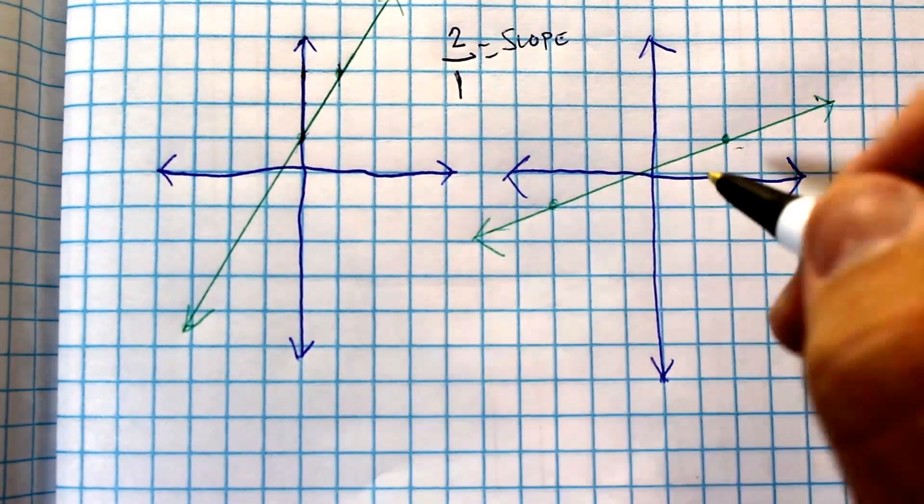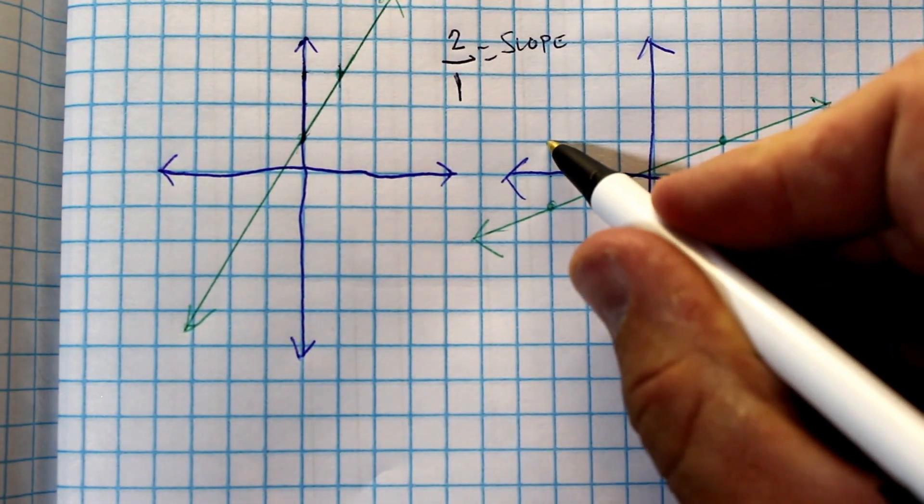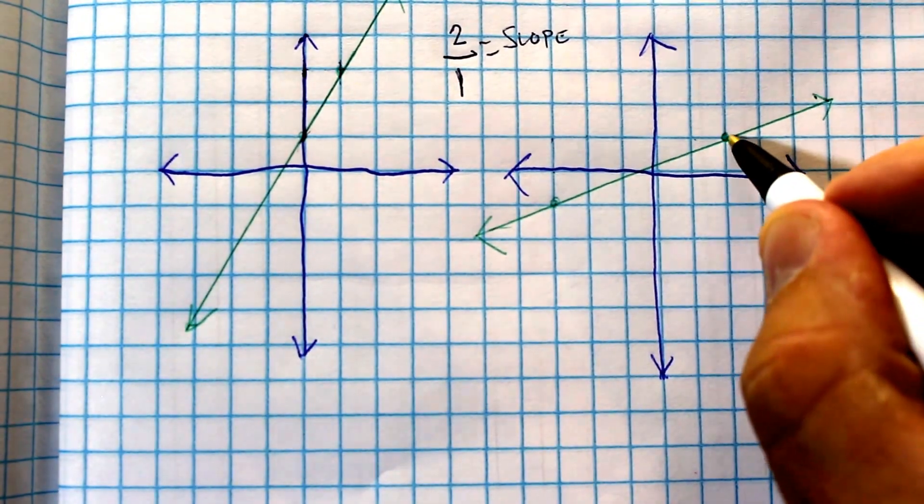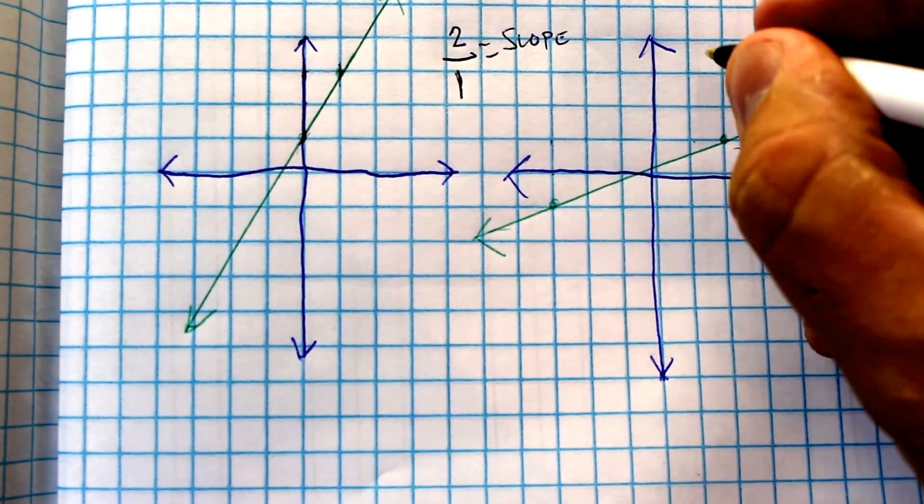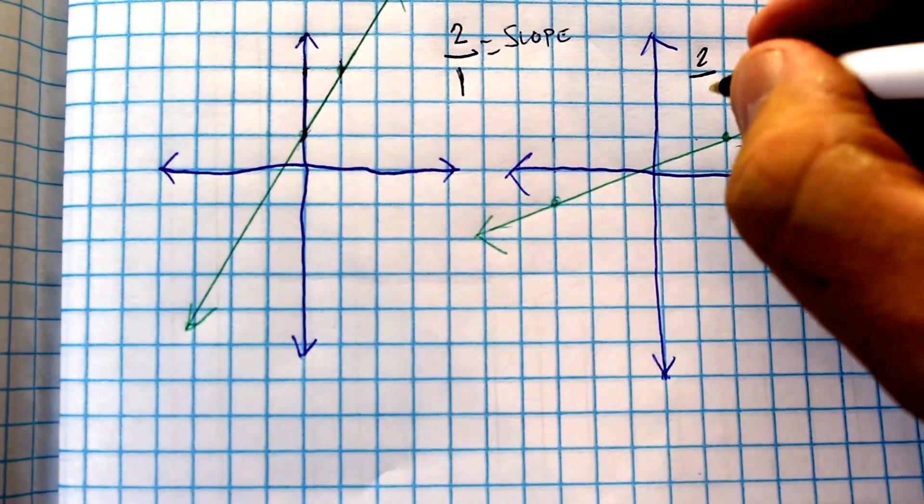If we look at this line here, we come up one, two, and over one, two, three, four, five. So we came up two, that's our rise, and then we came over, our run is five.